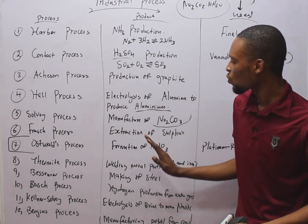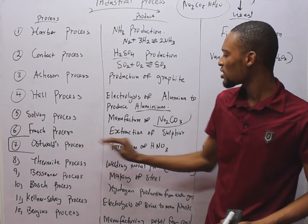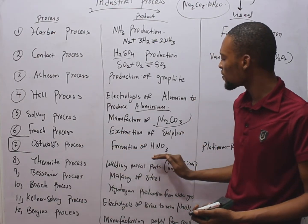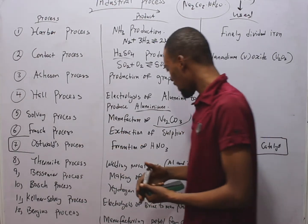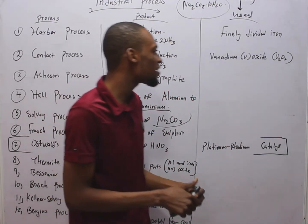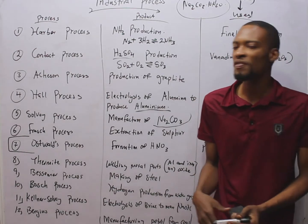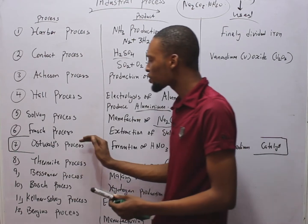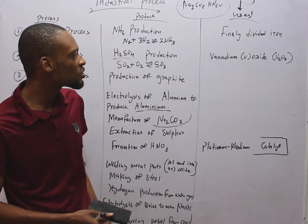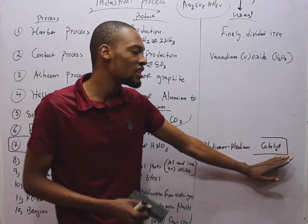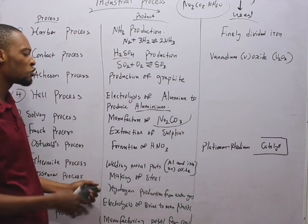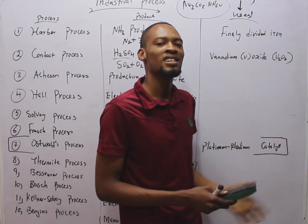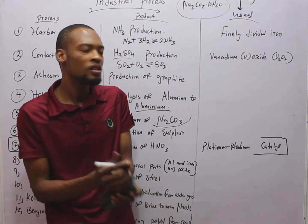The Frasch process is used in the extraction of sulfur. The Ostwald process is used in the formation of HNO₃ (nitric acid). So if you are asked which process is used in the production of HNO₃, you simply say the Ostwald process. This process requires a catalyst — the catalyst used is platinum-rhodium. Note that whenever you see 'finely divided metal,' it means the metal has been broken down into powdered form to give it more surface area.